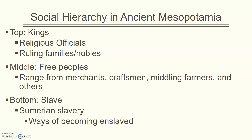The religious officials — the chief priests and all that — were also very powerful, and they supported the king as well. So the king and his family, then ruling families and religious officials underneath him, but he is at the top. The middle is the free peoples — these are merchants, craftsmen, some farmers, and others that provide a service that was deemed essential, and they were free peoples. That's what they refer to in the historical record.